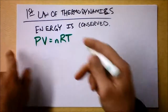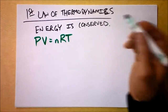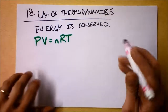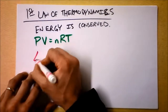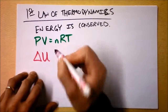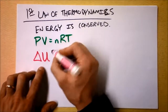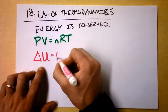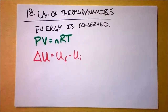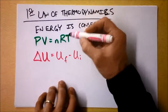And PV = nRT represents the energy in a gas. So if I were to say that this is changing, I could get a change in energy of the system. Delta U will be the change of the total energy of the system — it's going to be U final minus U initial.